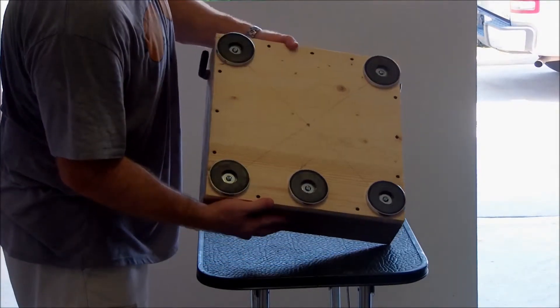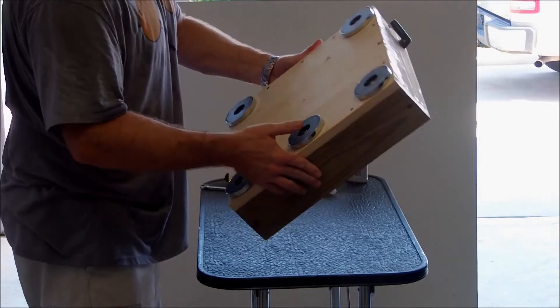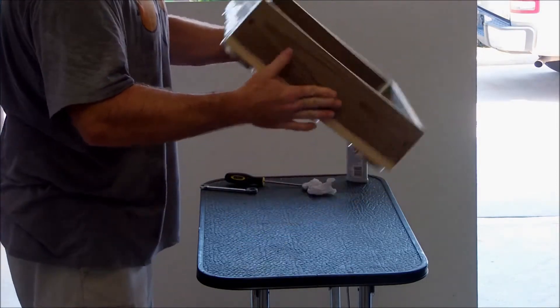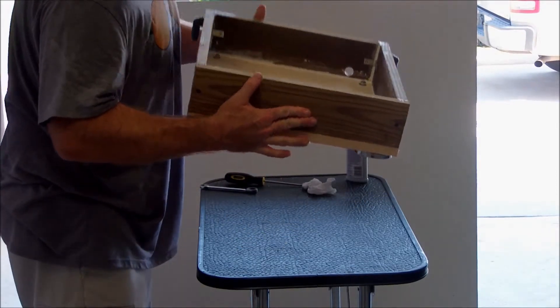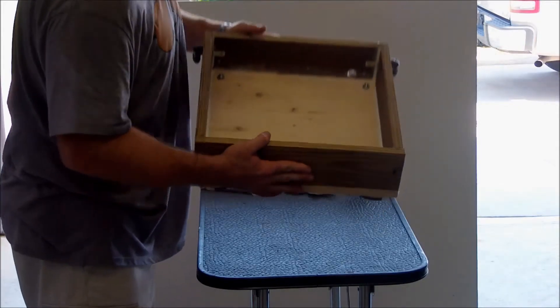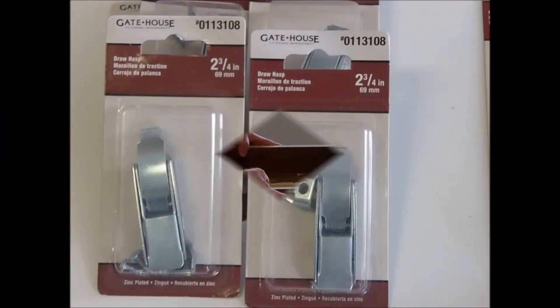That's it - all five magnets are in place. Those almost 500 pounds worth of pull are going to hold that to the top of the truck. Next, we're going to put the hasps on.